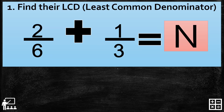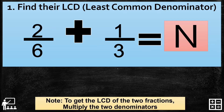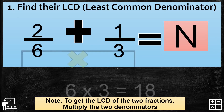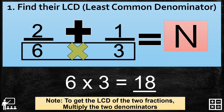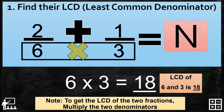First, find their LCD. To get the LCD of the two fractions, multiply the two denominators. In this example, the two denominators are 6 and 3. So 6 times 3 gives you 18. So 18 is our LCD and our new denominator.